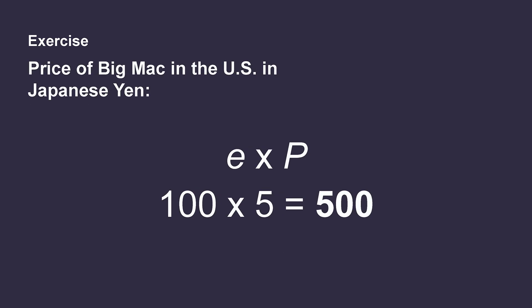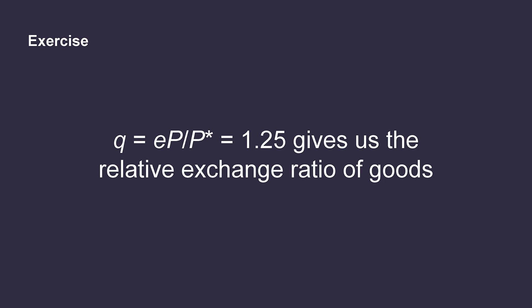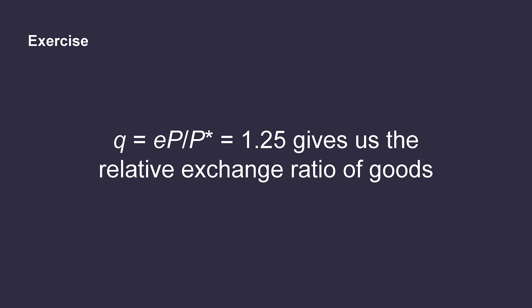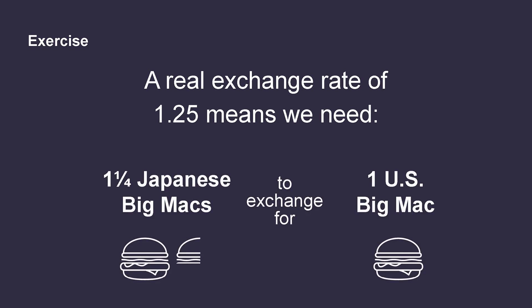Note that the numerator E times P gives us the price of Big Mac in the US in Japanese yen, which is equal to 500 yen in our example. The denominator is just the price of Big Mac in Japan in yen, which is 400 yen in our example. So when we divide the US Big Mac price in yen by the Japanese Big Mac price in yen, we get the relative exchange ratio between the Big Macs. Therefore, a real exchange rate of 1.25 means that we need one and a quarter Japanese Big Macs to exchange for one US Big Mac.